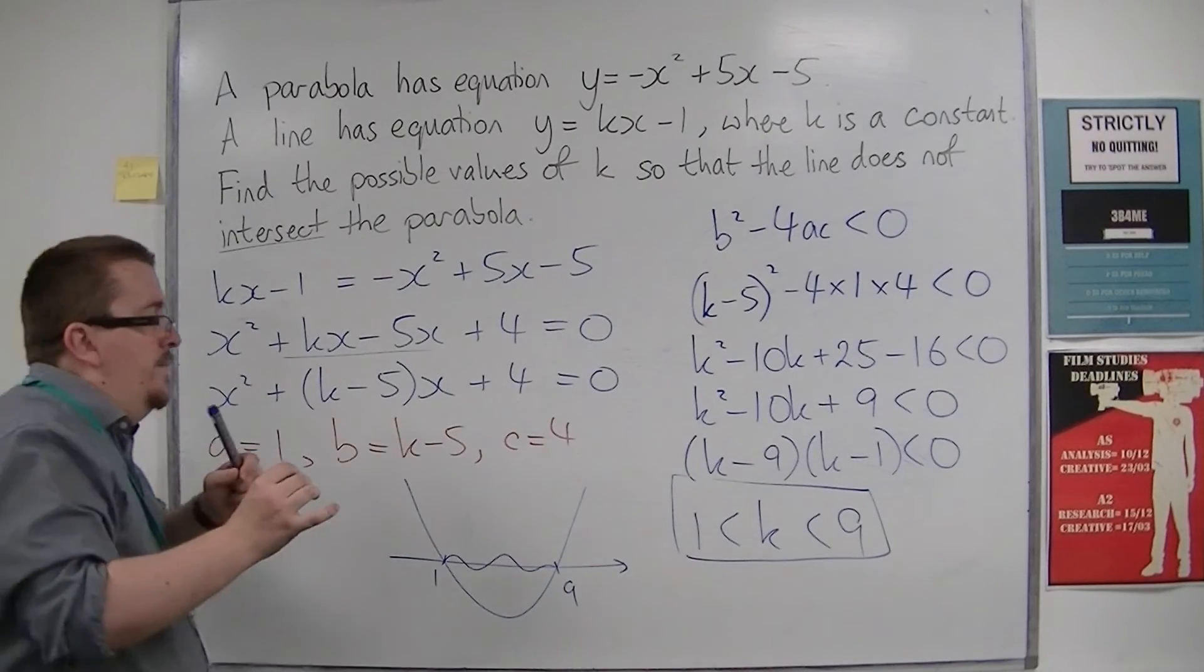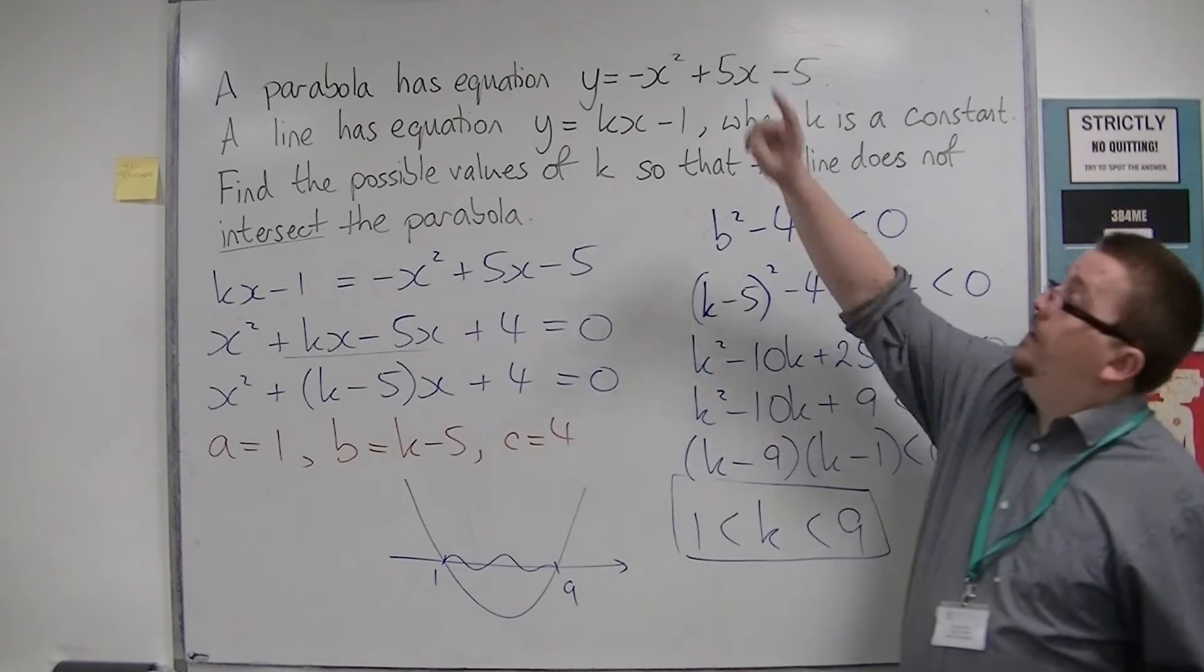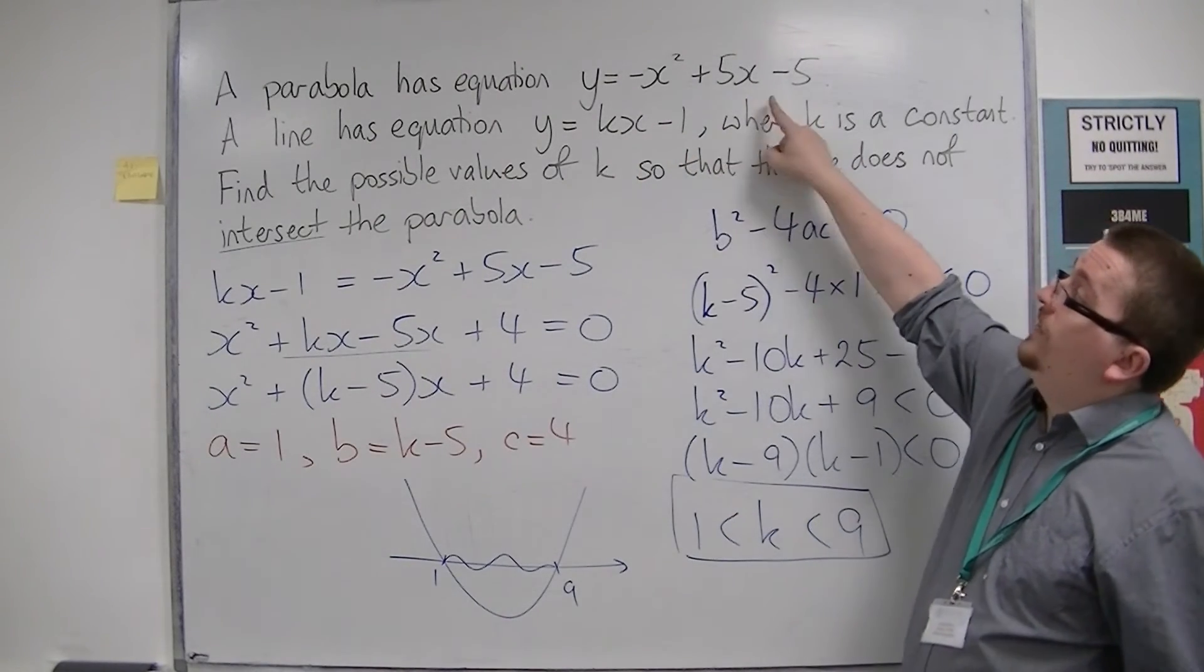So if k is any number between 1 and 9, then that would mean that this line does not intersect that one.